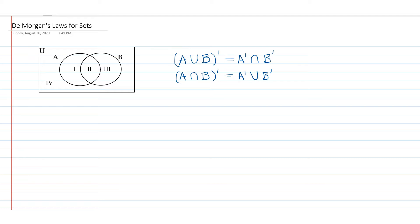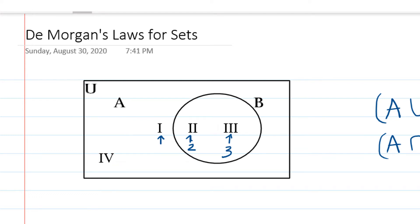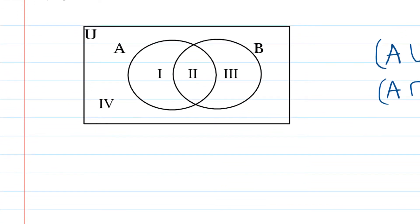Here I have a Venn diagram of two sets A and B with Roman numerals that represent the regions. Set A consists of region I and region II. Set B consists of region II and region III. Outside of A and B, but still in the universal set, is region IV. We'll treat those region labels as elements — so A is the set containing Roman numeral I and Roman numeral II.